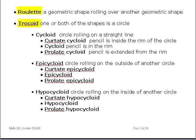Now, in these lectures, we're going to look at three special kinds of trochoids. The most famous of these is the cycloid. In a cycloid, a circle is rolling along a straight line.